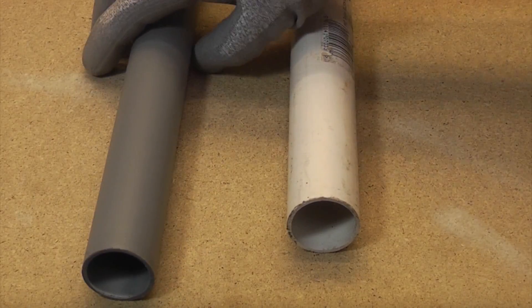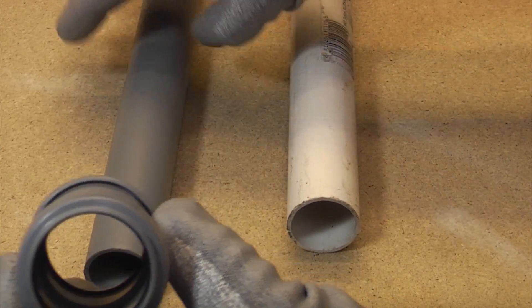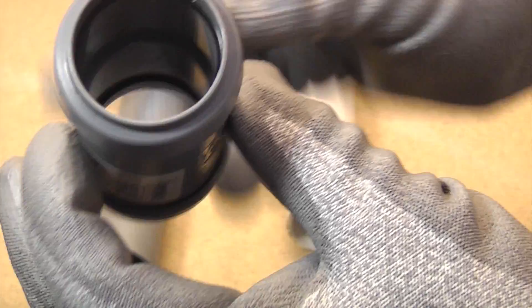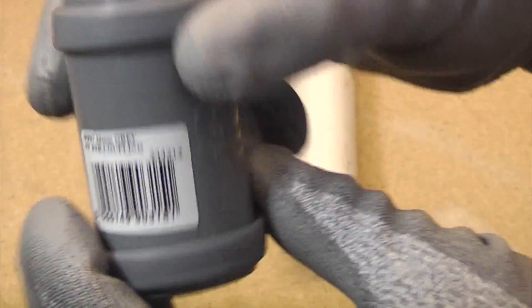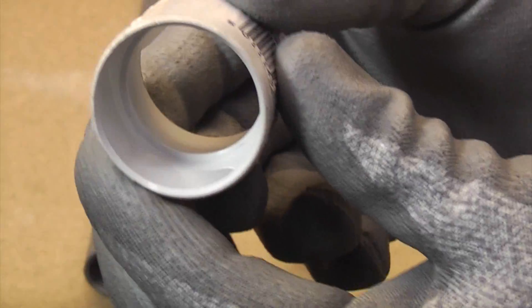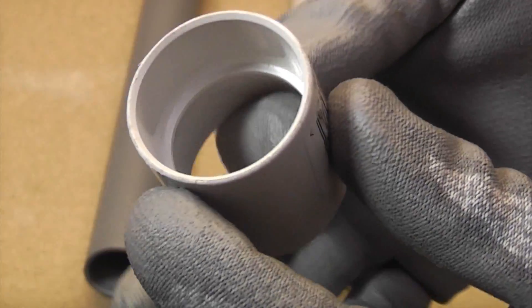So the push fit pipe like that is used with push fit joints, and push fit joints have a seal on the inside. The solvent weld joints don't have any seal on the inside.